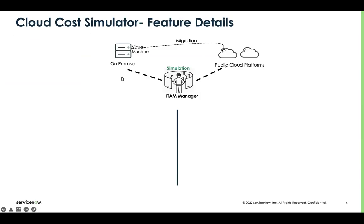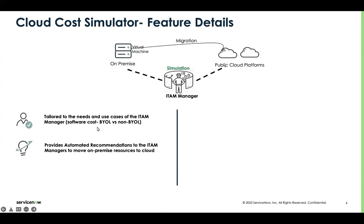If you want to understand the feature in more detail, it's tailored to the needs and use cases of the iTime manager. The iTime manager can not only understand the cost of infrastructure and the cost of software, but also see the cost of software with bringing your own license and without bringing your own license so that they can take the most effective decision. The feature provides automated recommendations to move on-premise resources to the cloud, based on end-of-life hardware, end-of-life software, and low utilization.